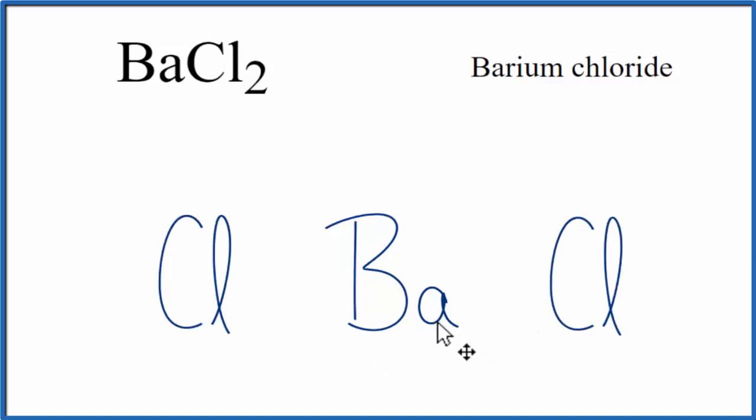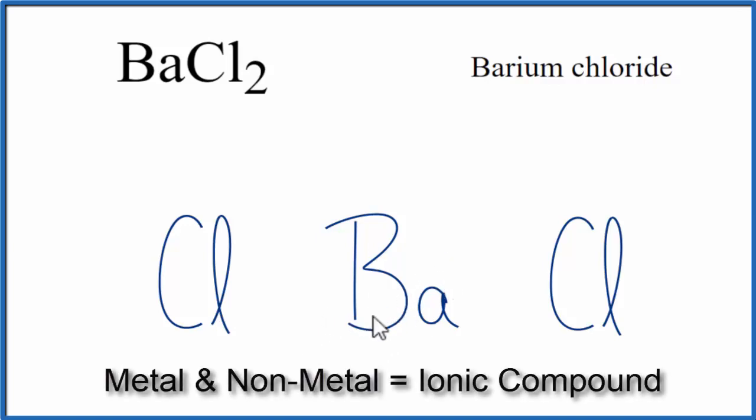Barium, that's a metal, and then chlorine, that's a non-metal. So when we have a metal and a non-metal, or non-metals, we have an ionic compound.